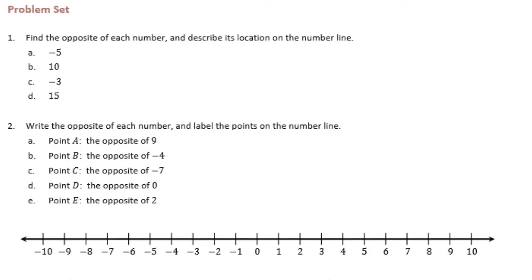6th grade module 3 lesson 4 problem set number 1: find the opposite of each number and describe its location on the number line. The opposite of negative 5 is 5, because negative 5 is 5 units from 0. The opposite is 5 units in the opposite direction, so the opposite of negative 5 is 5, which is 5 units to the right of 0.